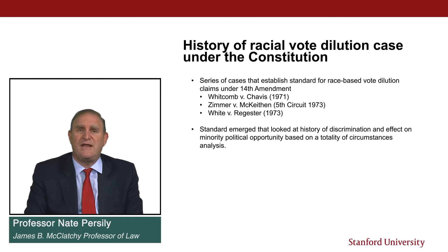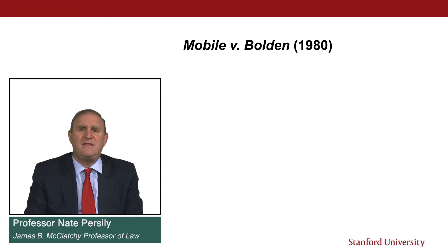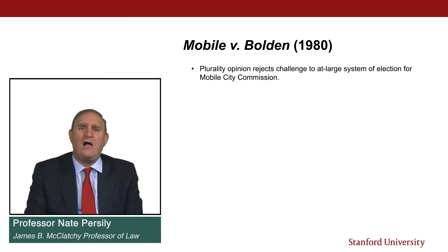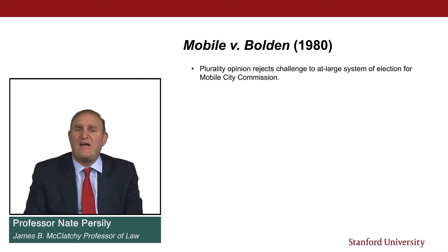Mobile versus Bolden came in 1980. In a plurality opinion challenging the at-large system of elections in Mobile for the Mobile City Commission, the court makes clear that the standard under the Equal Protection Clause as it applies to redistricting is the same as for other areas of governmental action. In that case, three members of the Mobile City Commission were all elected by the entire population of Mobile — 35% of which was African-American — but there were no Black commissioners.